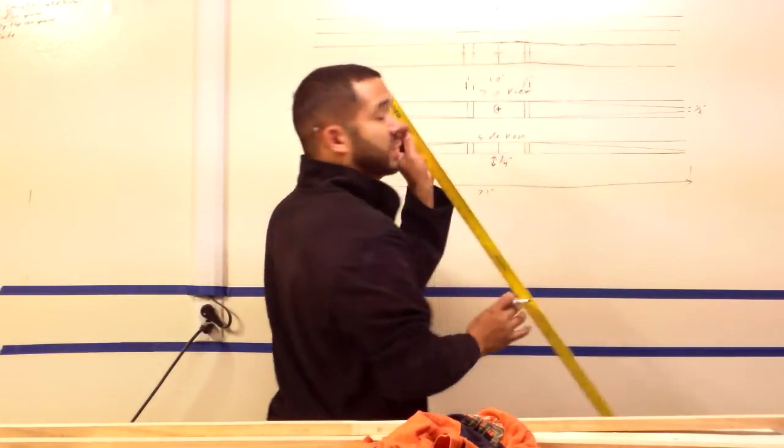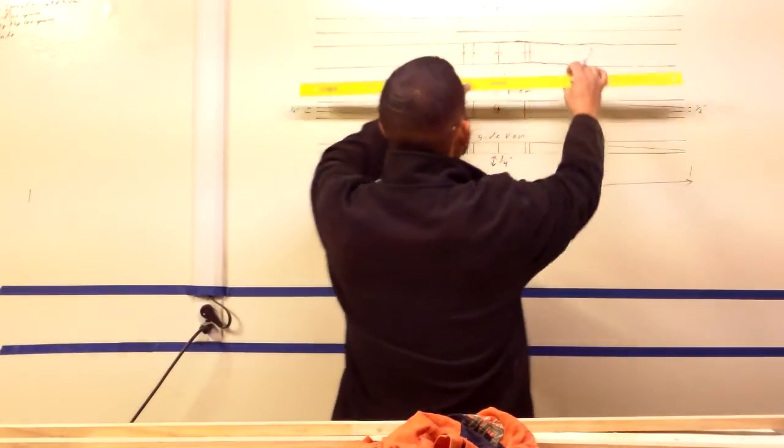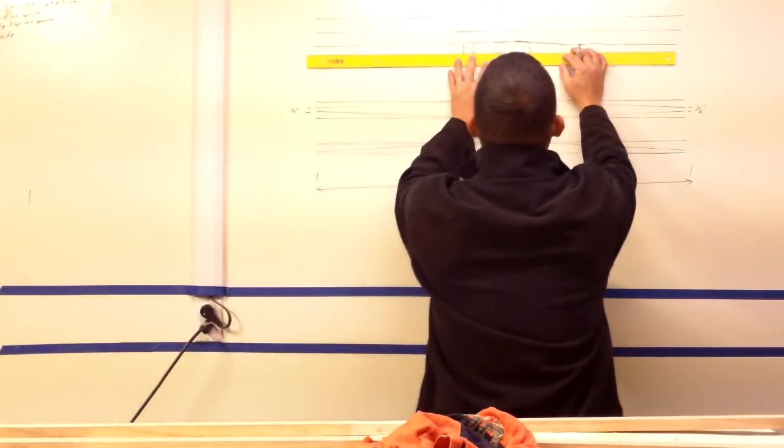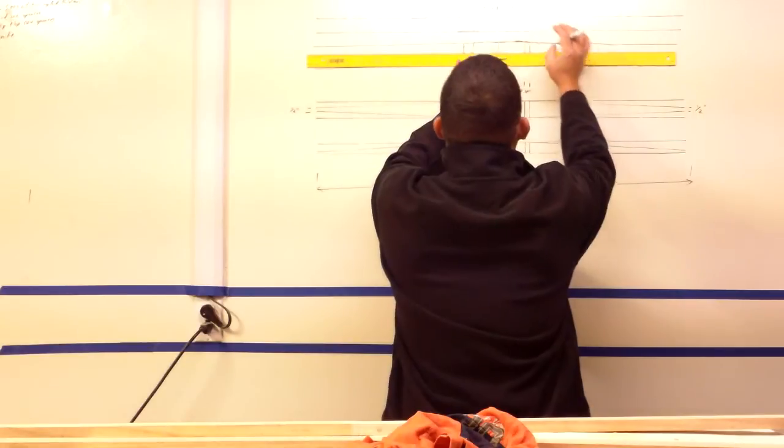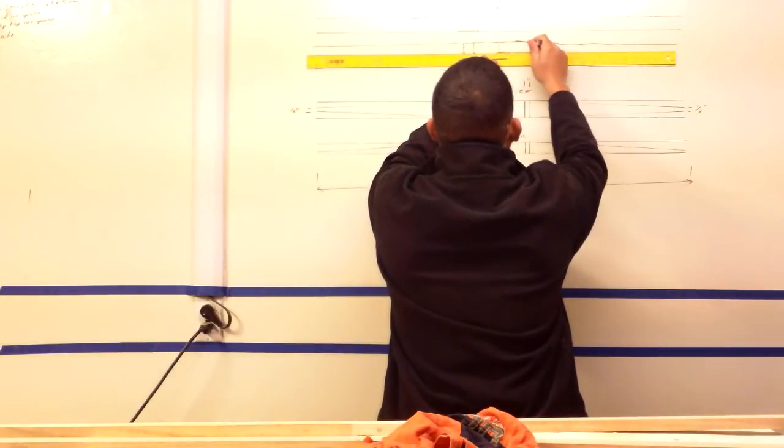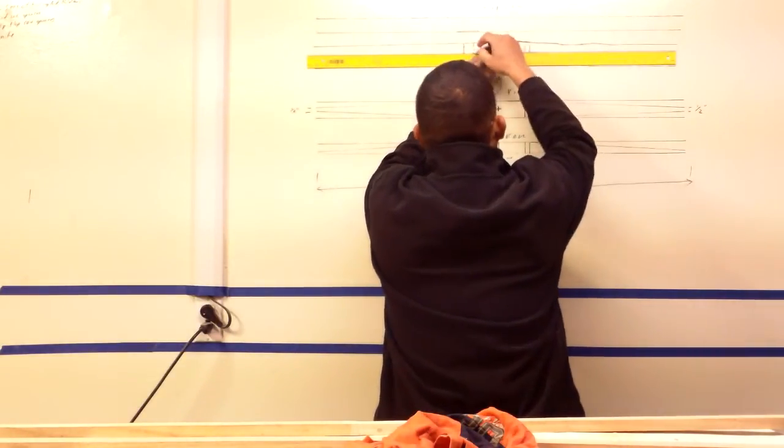You take your ruler, you line up all the dots, and go ahead and draw that line, across your bow.